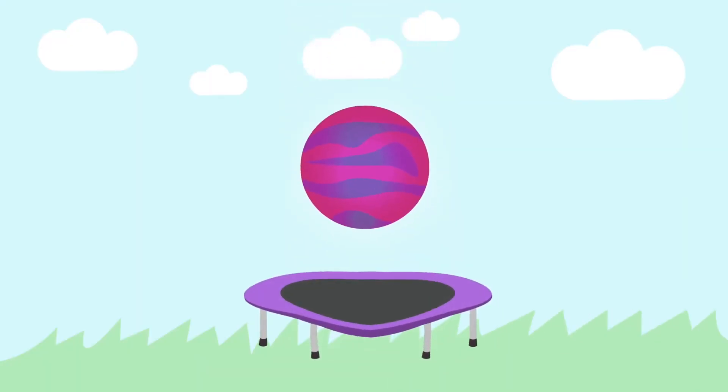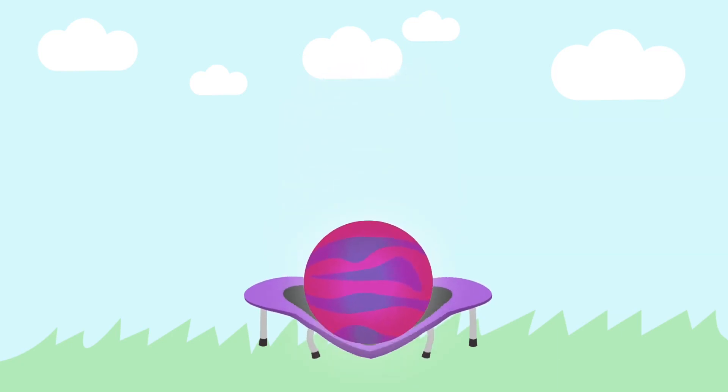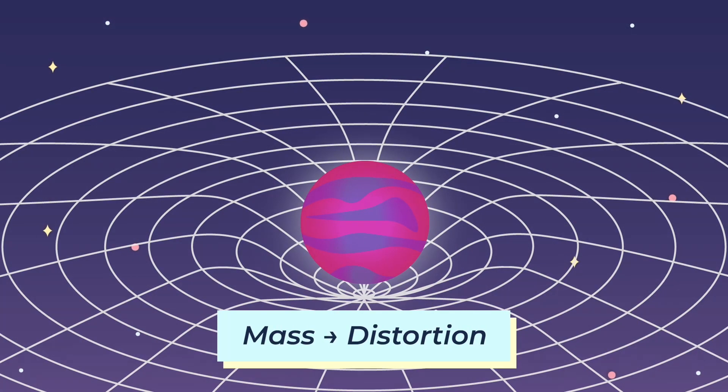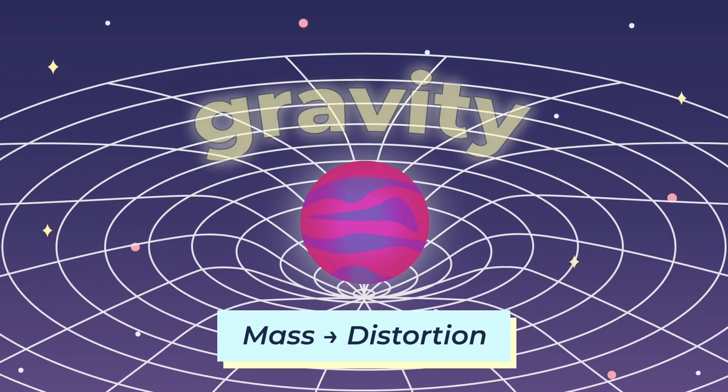Think of it like this. Imagine a really, really heavy planet on a trampoline. The depression, or the warp, is just a natural occurrence due to its heavy mass. Now imagine that the trampoline is space. Mass leads to a distortion, and this distortion is an effect that we perceive as gravity.